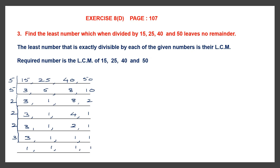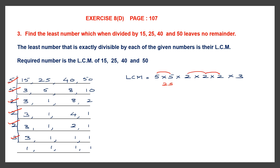Now the LCM will be the multiplication of all these. There are two 5s: 5 into 5. There are three 2s: 2 into 2 into 2, and a 3. So we have two 5s, three 2s and one 3. Now let's multiply: 5 fives are 25. Then 2 twos are 4, 4 twos are 8. So 25 into 8 into 3. 25 into 8 is 200, and 200 into 3: 2 threes are 6, then add two zeros.